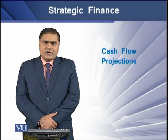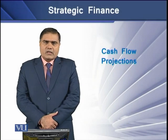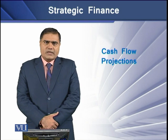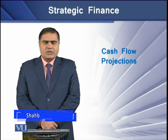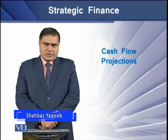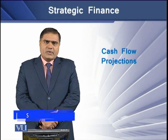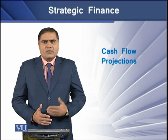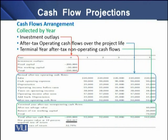Cash flows are the significant item used in capital budgeting to determine the financial worth of an intended project. These cash flows can be classified and arranged in a number of ways. The first way to organize and classify a project's cash flows is according to the timing of their occurrence across the life of the project. In this regard, we can classify these cash flows into three heads.